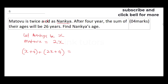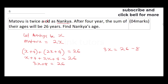The sum of their ages gave 26 years. So we solve: X + 4 + 2X + 4 = 26, which gives 3X + 8 = 26. Collecting like terms, 3X = 26 − 8 = 18, and X = 18 ÷ 3 = 6. So therefore, Nankia is 6 years old.